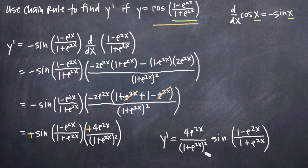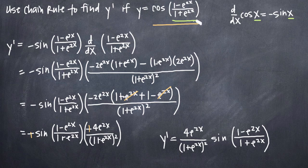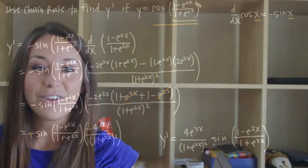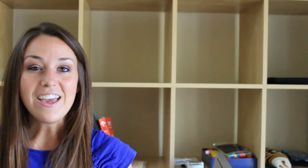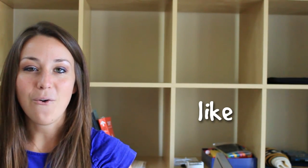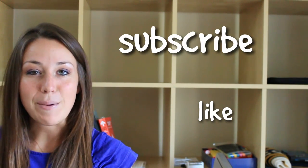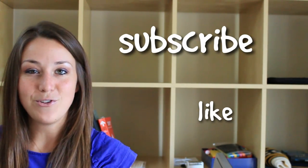And that's it. That's how you use chain rule to take the derivative of this function, considering cosine as the outside function and 1 minus e to the 2x divided by 1 plus e to the 2x as the inside function. I hope you found that video helpful. If you did, like this video below and subscribe to be notified of future videos.